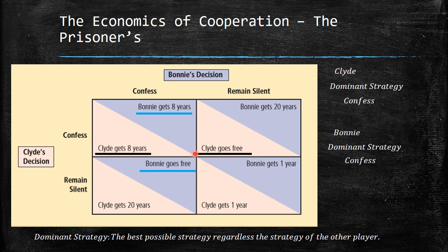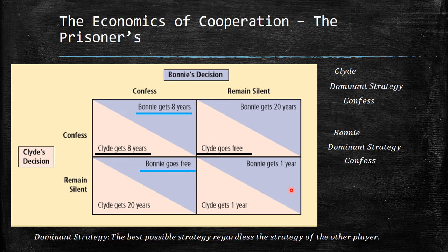You might say they're being silly because they could both get just one year. But the point is they have a lot of incentive to move. Imagine we're at the cooperative solution — both remaining silent, getting one year. If I know the other guy will remain silent, I can confess and go free. The same logic applies to Clyde. So this cooperative outcome is not a sustainable equilibrium. The Nash equilibrium — where both confess — is where neither player has any incentive to move.